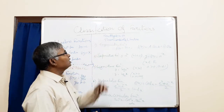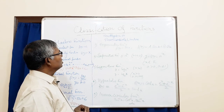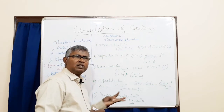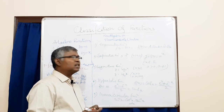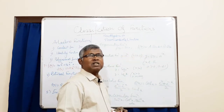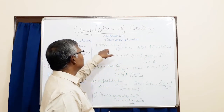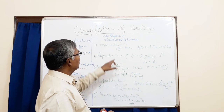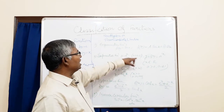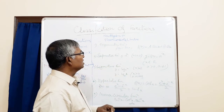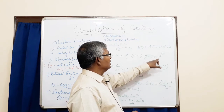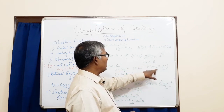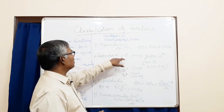Now the non-algebraic functions: there are six trigonometric functions — sin x, cos x, tan x, cosec x, sec x, and cot x — and their algebraic sums and relations are also included. All these types are called trigonometric functions. For exponential functions, y equals e to the power x, where e lies between 2 and 3, or y equals f(x) equals a to the power x, where x belongs to R and a is greater than 0 and a is not equal to 0. All these are called exponential functions.